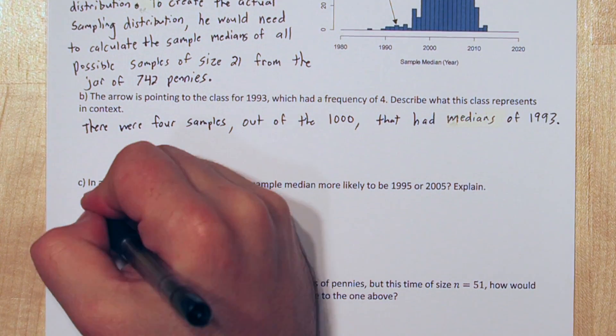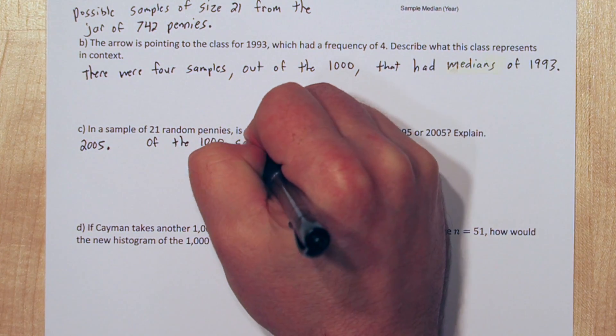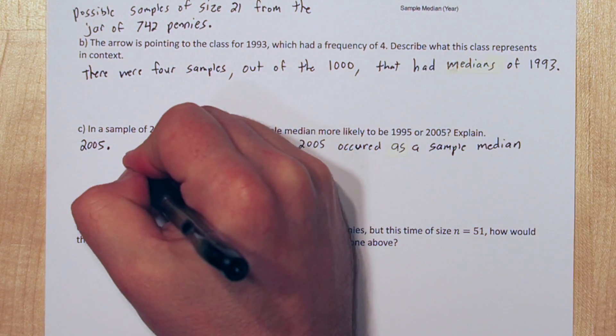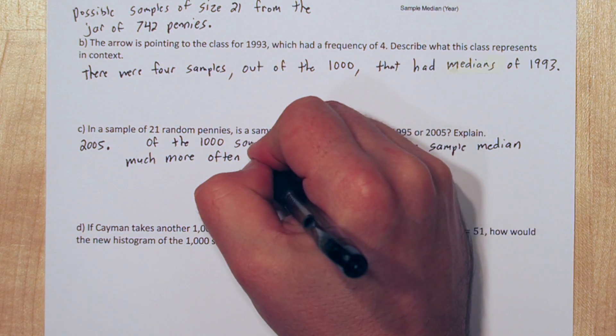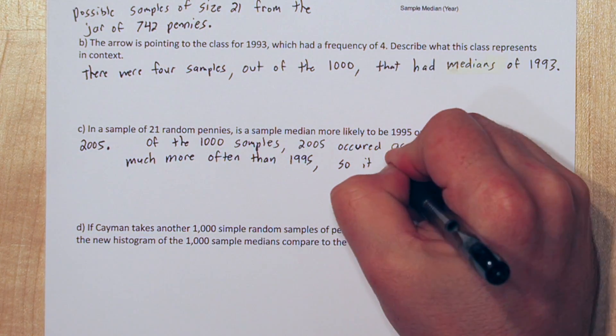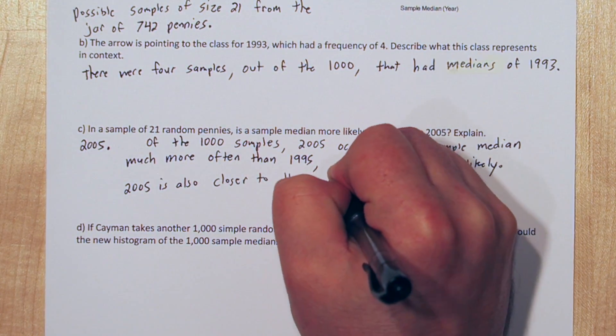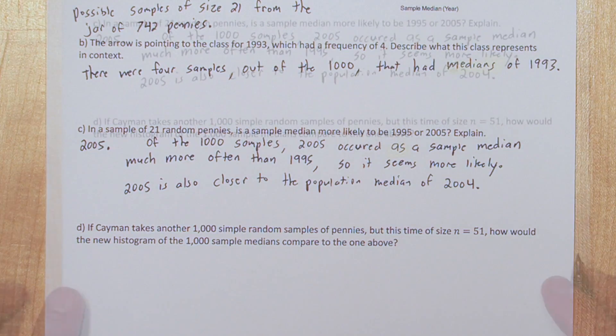The answer to part C is 2005. Of the 1,000 samples, 2005 occurred as a sample median much more often than 1995, so it seems more likely. Also, 2005 is closer to the population median of 2004, which was given in the previous problem.